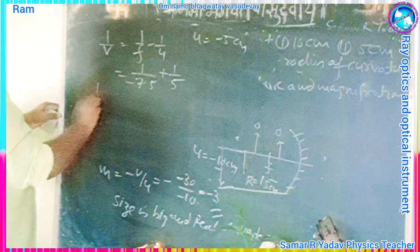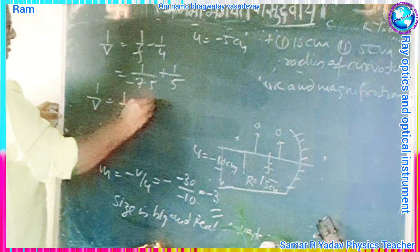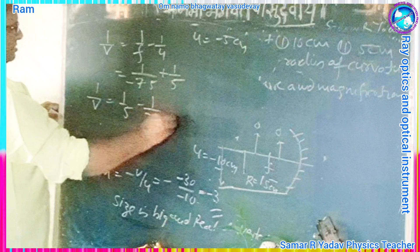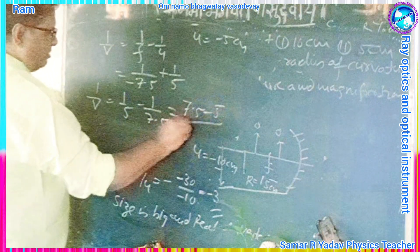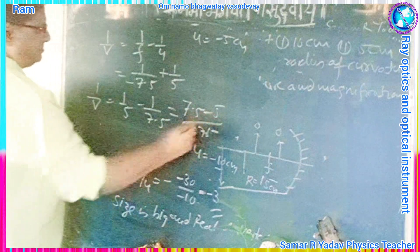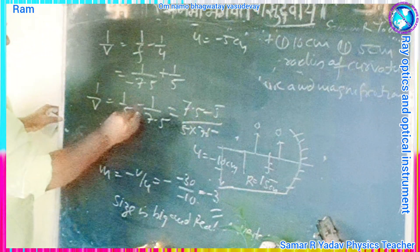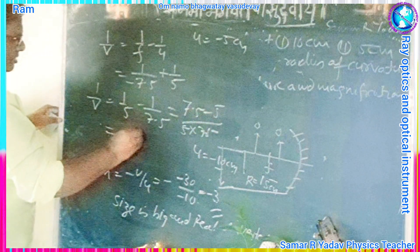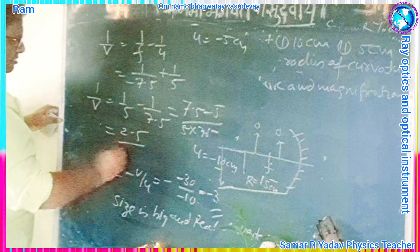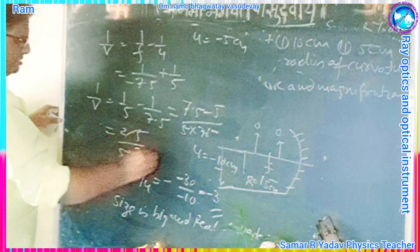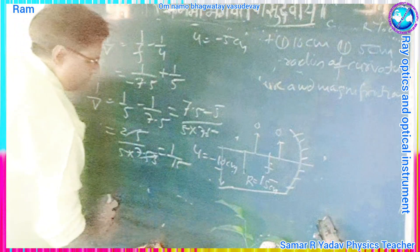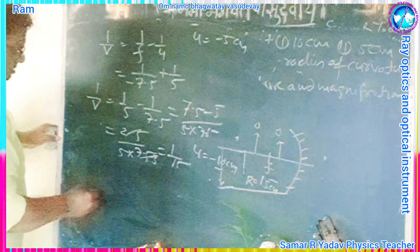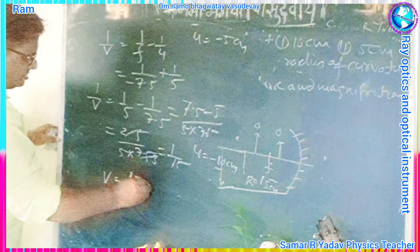So we get 1 upon V is equal to 1 upon 5 minus 1 upon 7.5. Simplifying, we get 7.5 minus 5 divided by 5 into 7.5, equal to 2.5 divided by 37.5, which gives 1 upon 15. Therefore, V is equal to 15 cm.